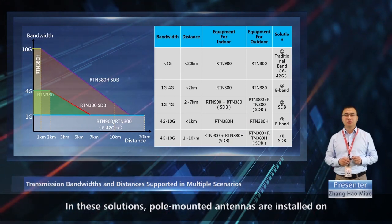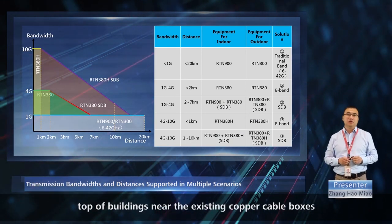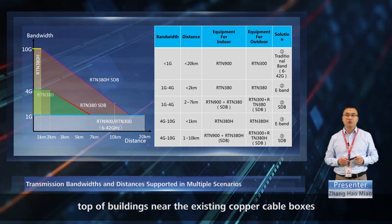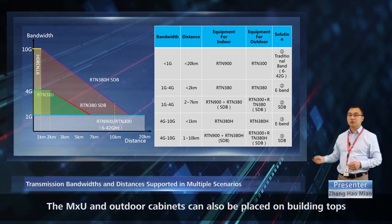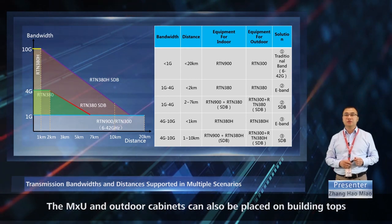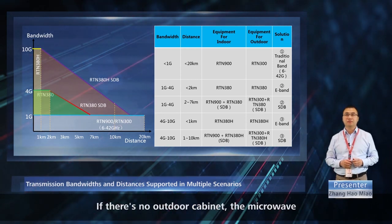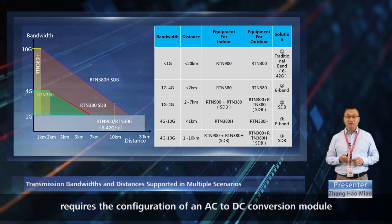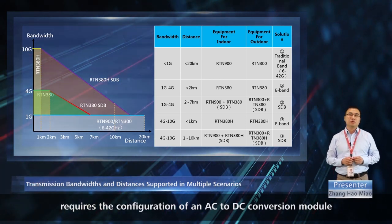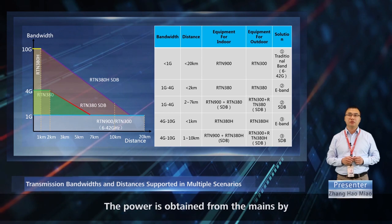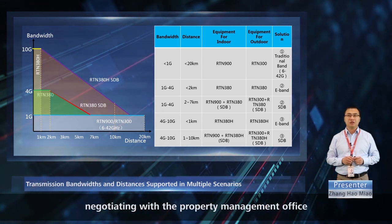In these solutions, pole-mounted antennas are installed on top of buildings near the existing copper cable boxes. The MXU and outdoor cabinets can also be placed on building tops. If there's no outdoor cabinet, the microwave requires the configuration of an AC to DC conversion module. The power is obtained from the mains by negotiating with the property management office.